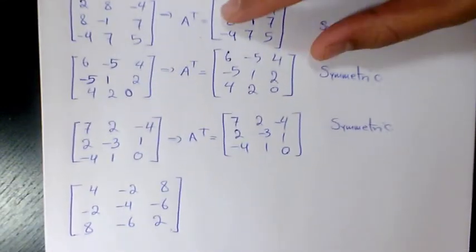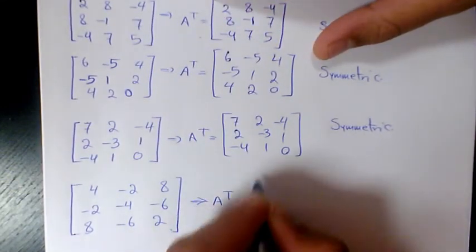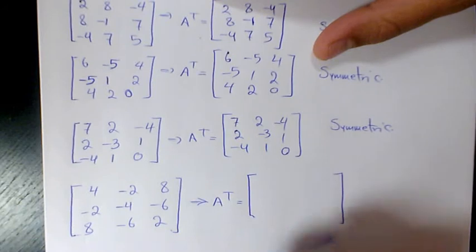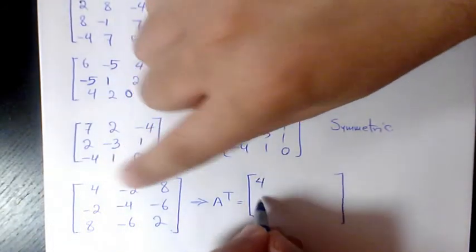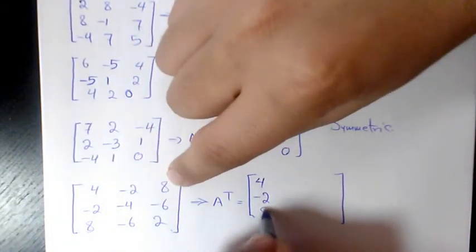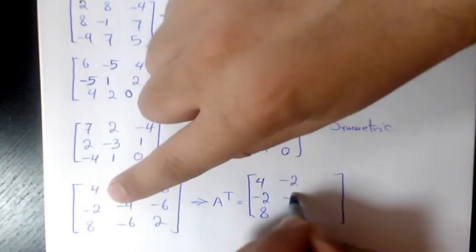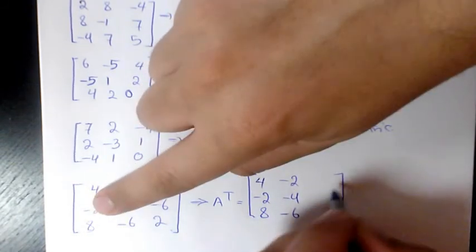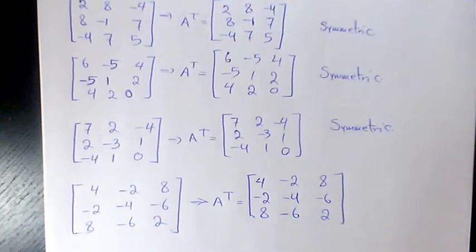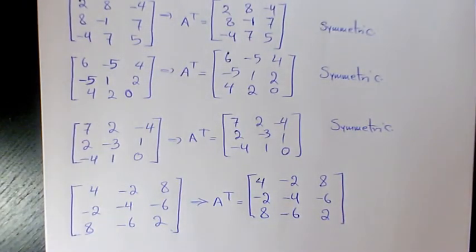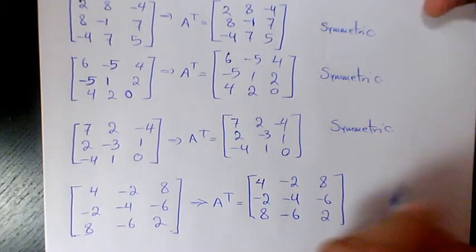What about the last one? 3 by 3, so 4, negative 2, 8; negative 2, negative 4, negative 6; 8, negative 6, and 2. Again, when you compare it, you have exactly the same answer, so it means that that's a symmetric matrix too.